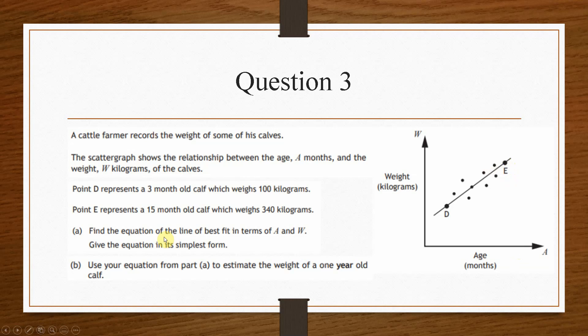And then it asks us, find the equation of the line of best fit in terms of A and W. Now this means that instead of having x and y, we need to replace these with A and W.